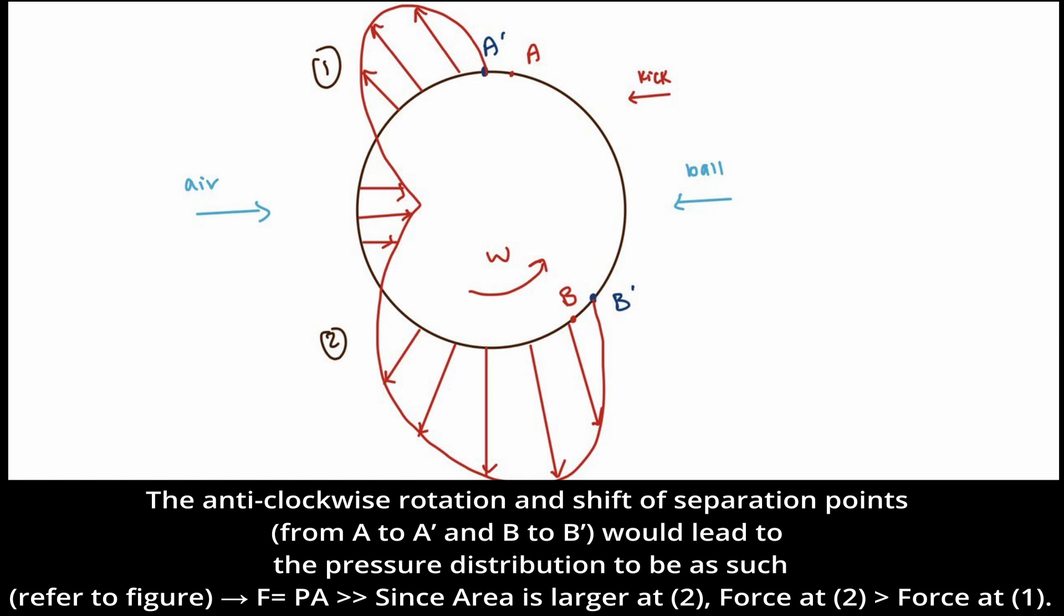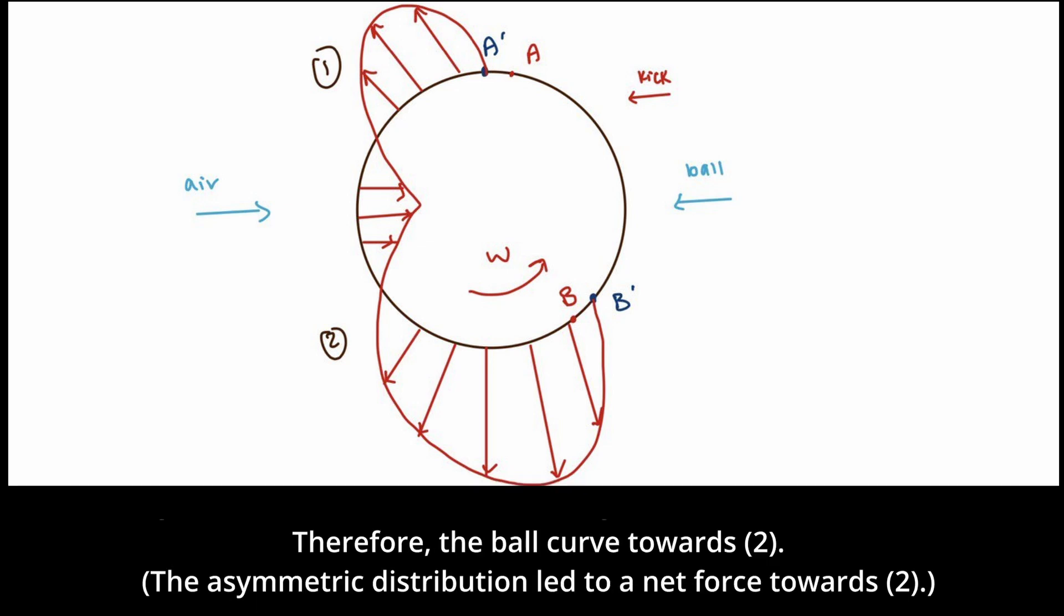The anticlockwise rotation and shift of separation points from A to A' and B to B' would lead to the pressure distribution to be as such. F equals PA, so since area is larger than 2, force at 2 will be greater than force at 1. Therefore, the ball curved towards 2. The asymmetric distribution led to a net force towards 2.